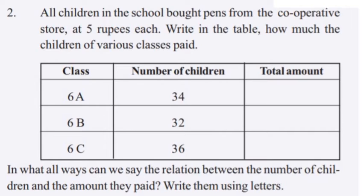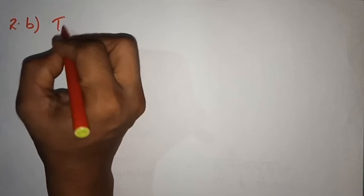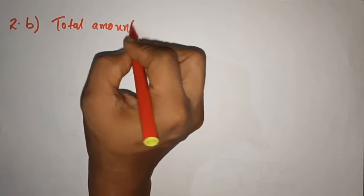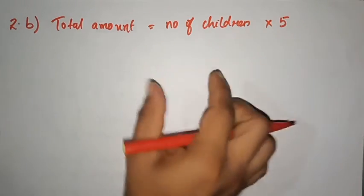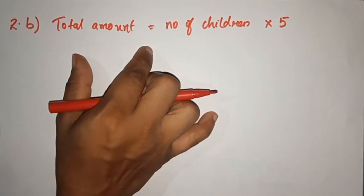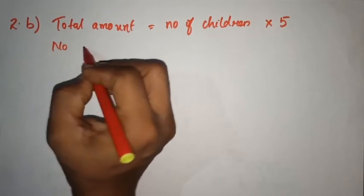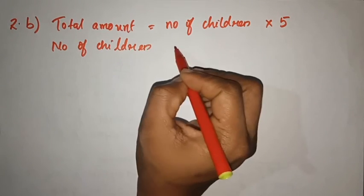If you want to see the amount paid by children in class 6, you can see the amount. In what ways can we say the relation between the number of children and the amount they paid? Write them using letters. The total amount equals the number of children into 5. Number of children × 5 gives the total amount.